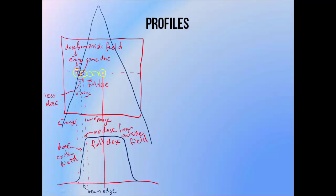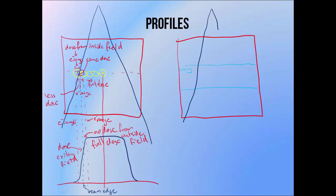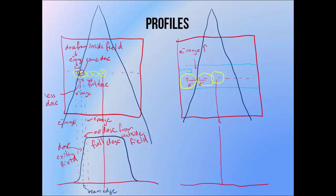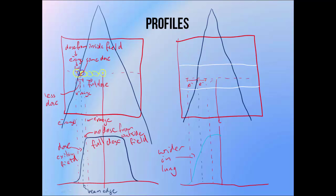So the size of the penumbra depends a great deal on the electron range. In lung, this electron range is greatly increased, meaning that lateral electronic equilibrium will start to be lost a greater distance from the beam edge, and secondary electrons generated inside the beam can travel a greater distance outside of the edge, so the beam penumbra tends to be wider in lung. In bone, the electron range is reduced, so the distance from the edge of the beam at which we start to lose dose is reduced, and secondary electrons can't travel as far, so they tend to deposit their dose closer to the edge of the beam — in higher density materials like bone the penumbra tends to be narrower.